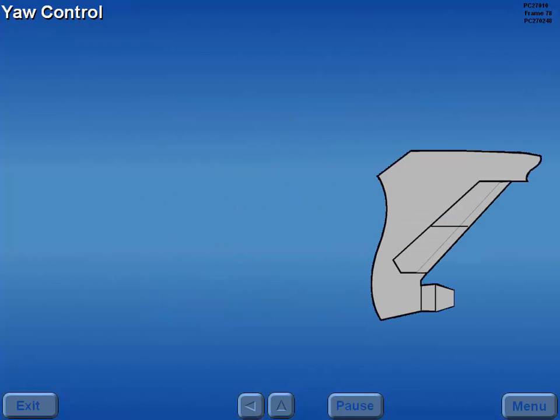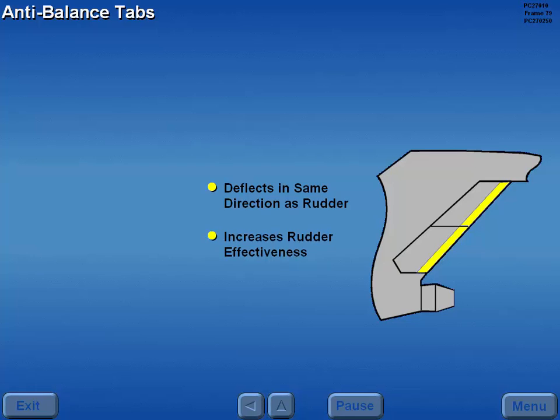Yaw control is provided by two hydraulically operated rudders and the respective anti-balance tabs. The anti-balance tabs deflect in the same direction as the rudder to increase rudder effectiveness.